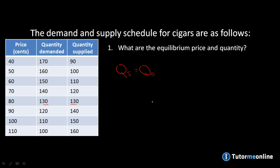So we can say that the equilibrium quantity QE is 130, which means that the equilibrium price is 80 cents. Equilibrium is achieved where quantity supplied equals quantity demanded.